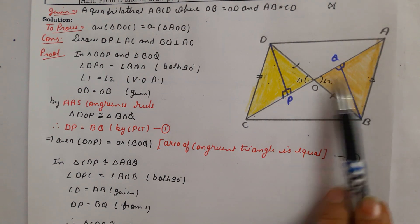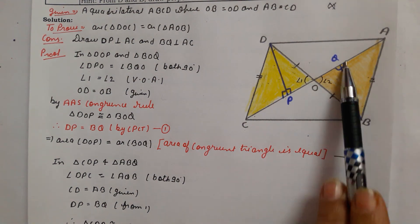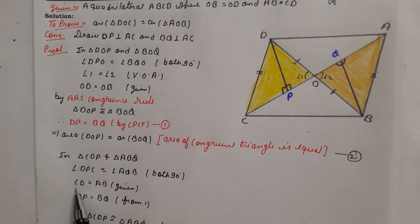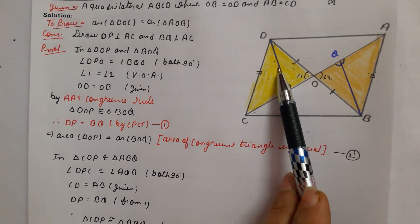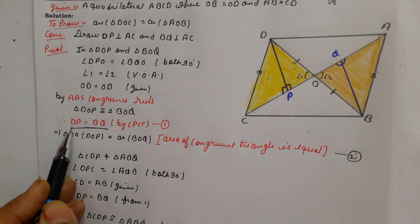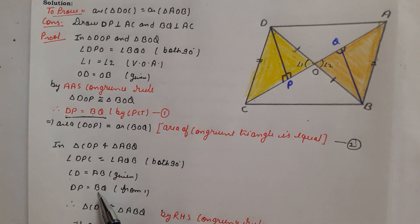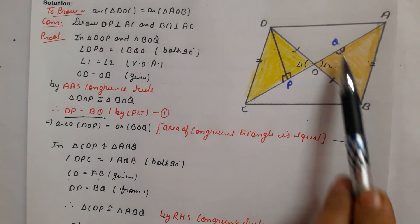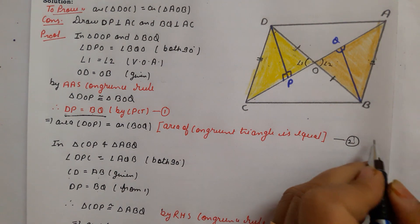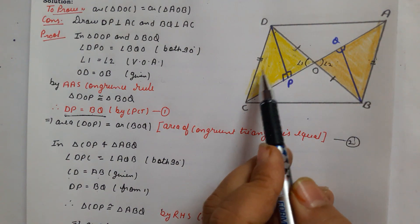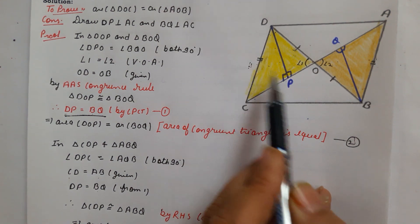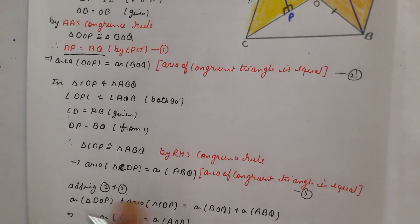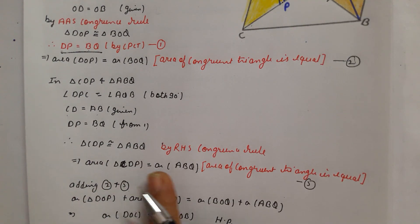Next we take triangle CDP and triangle ABQ. CD equals AB (given), DP equals BQ (proved by CPCT above), and Angle DPC equals Angle BQA equals 90 degrees (by construction). Since both are right-angle triangles with hypotenuse and side equal, by the RHS congruence rule, triangle CDP is congruent to triangle ABQ.